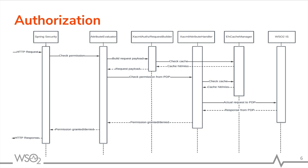Now let's look at the sequence diagram of the XACML authorization request and response. First, Spring Security intercepts the incoming HTTP request and passes it to the Attribute Evaluator component, which is the bridge between the SDK and Spring Security. The Attribute Evaluator calls the XACML Auth Request Builder component to create the XACML request payload, which is then passed to the XACML Attribute Handler. The XACML Attribute Handler communicates with the PDP — in our case WSO2 Identity Server — and returns the decision back to Spring Security. The SDK also includes an EH Cache Manager component; the XACML Auth Request Builder and XACML Attribute Handler work with it to minimize latency.